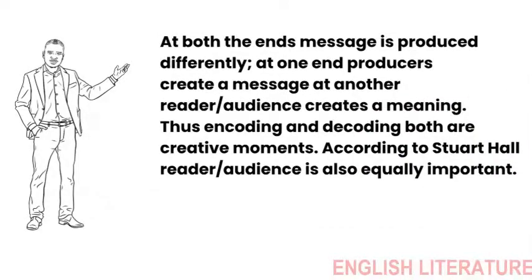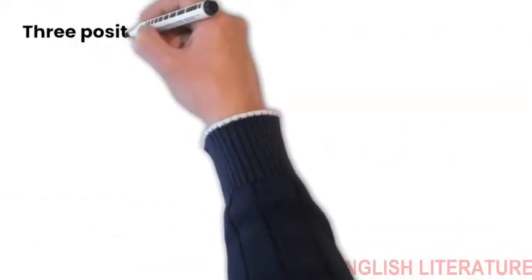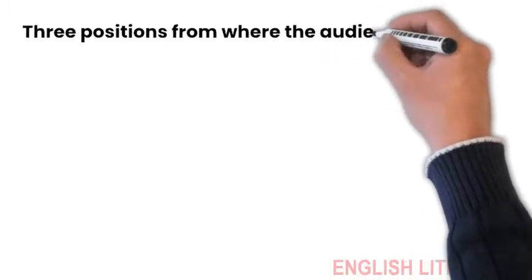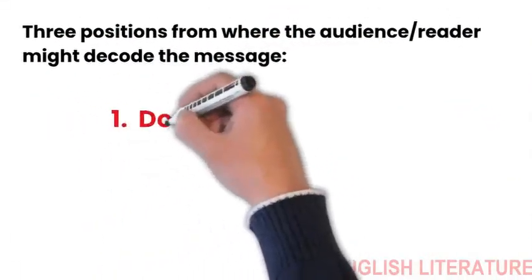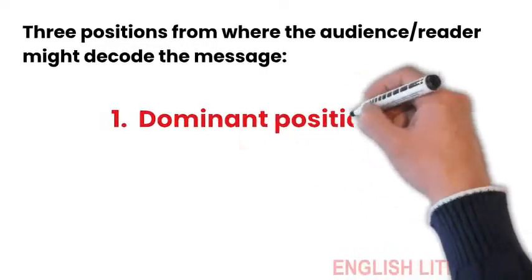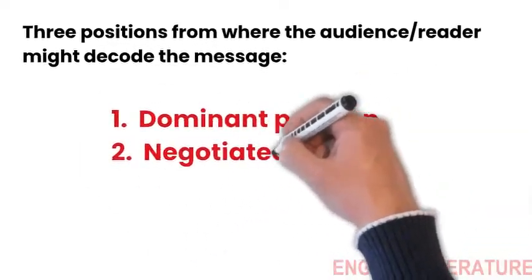Here, Hall identifies three positions from where the audience or reader might decode the message: 1. Dominant position 2. Negotiated position 3. Oppositional position.